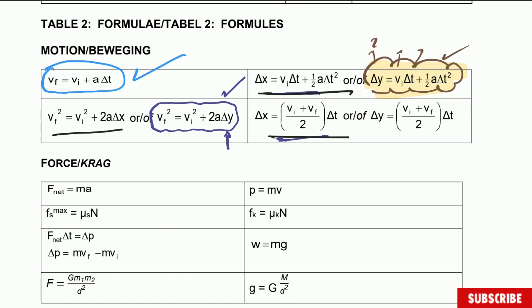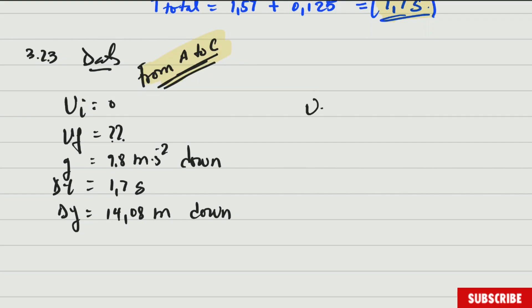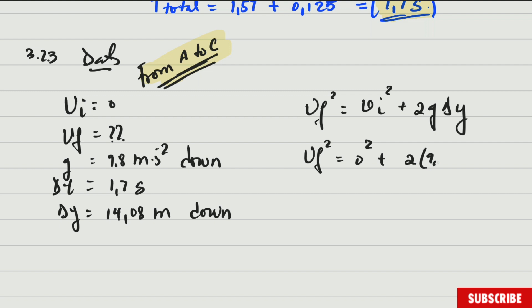Any of the three formulas for displacement can be used — good news. I'll use the one already rearranged for final velocity: final velocity squared equals initial velocity squared plus 2 times acceleration times displacement. Substituting: final velocity squared equals 0 squared plus 2 times 9.8 times 14.08. The final velocity equals 16.61 meters per second.